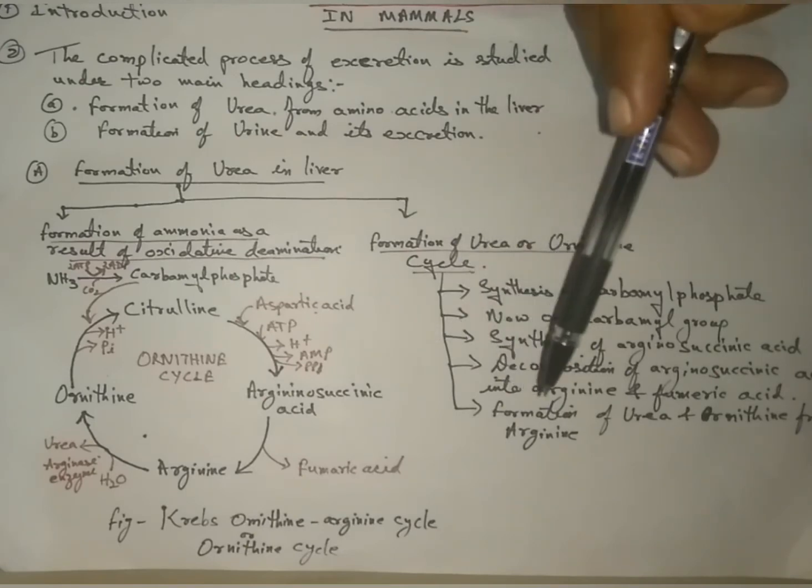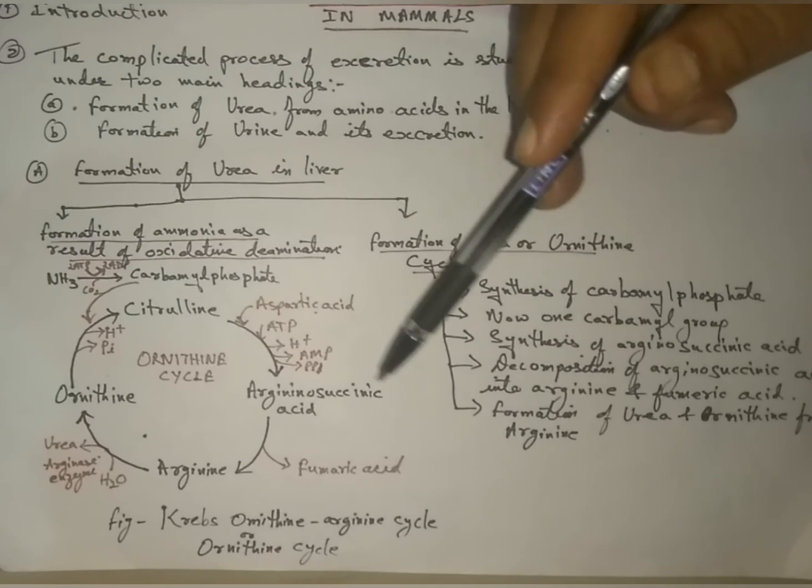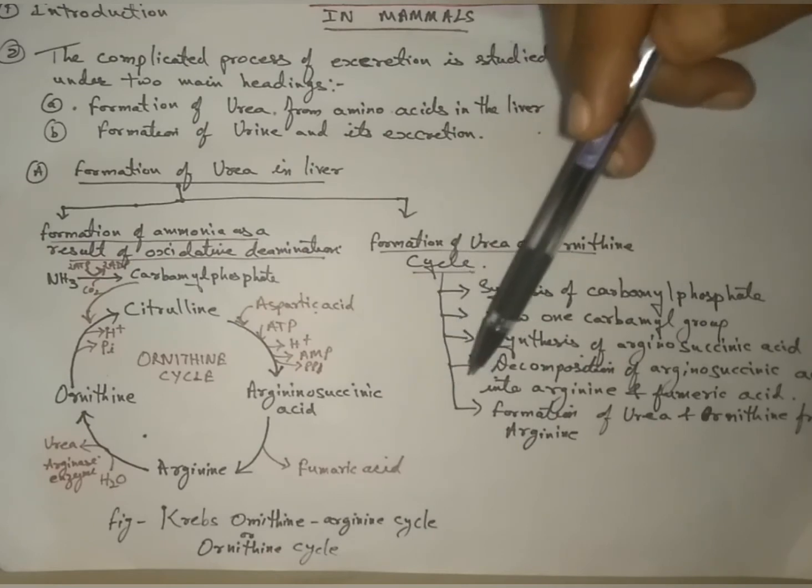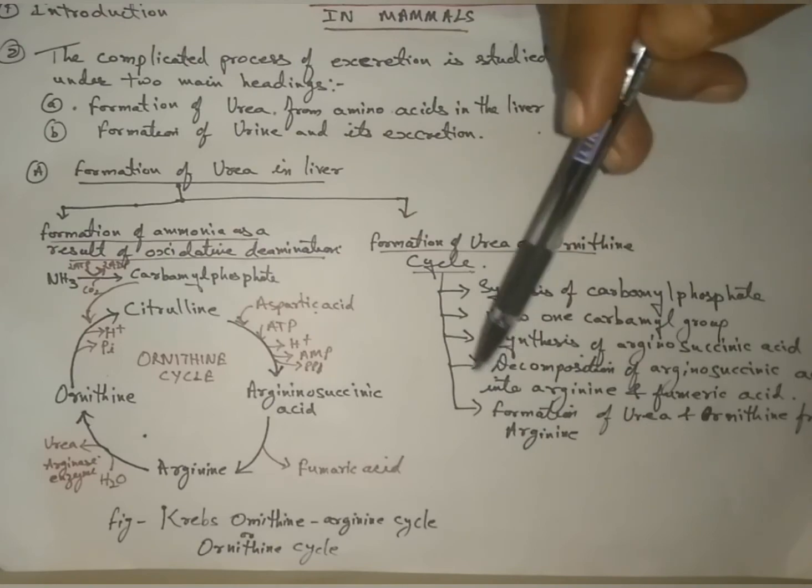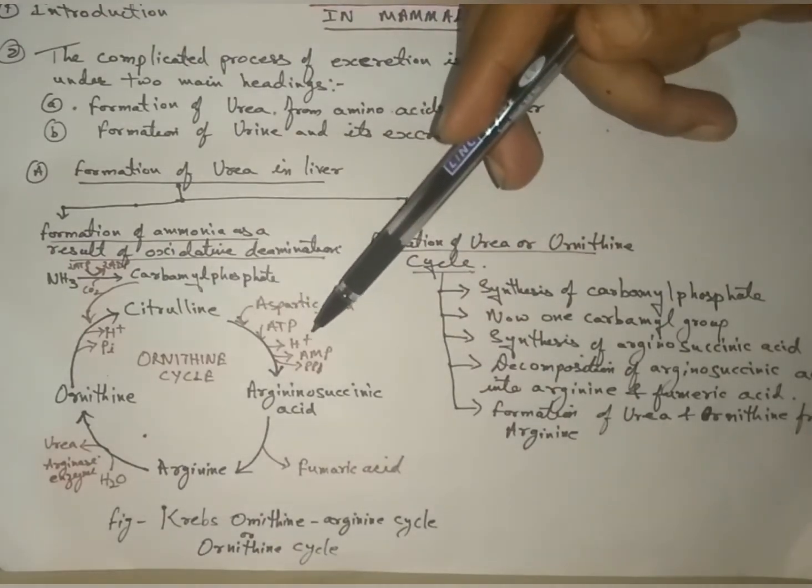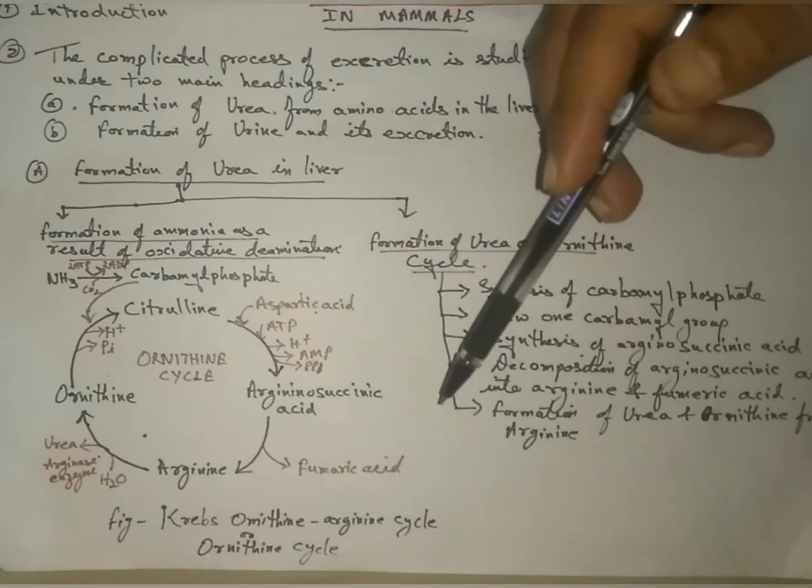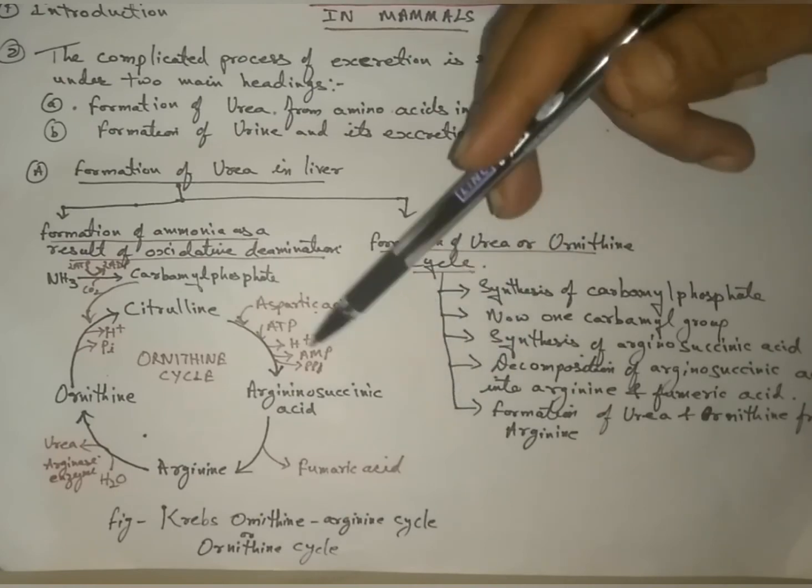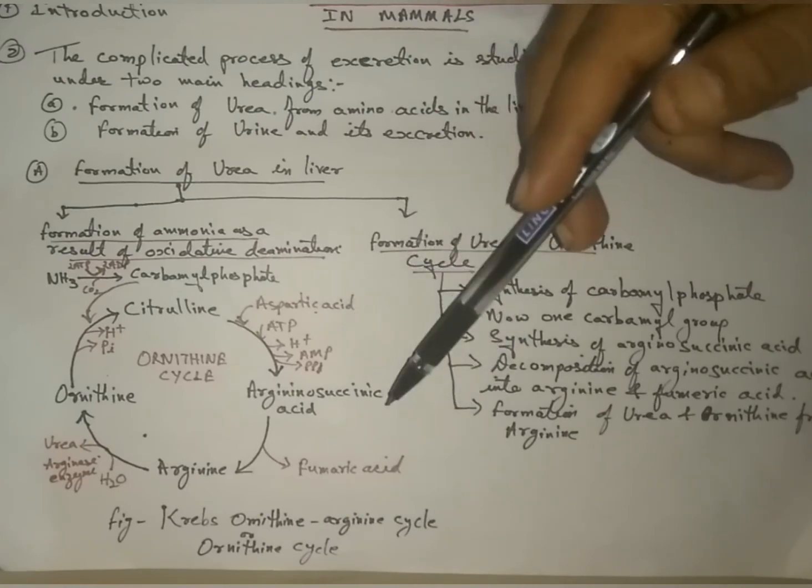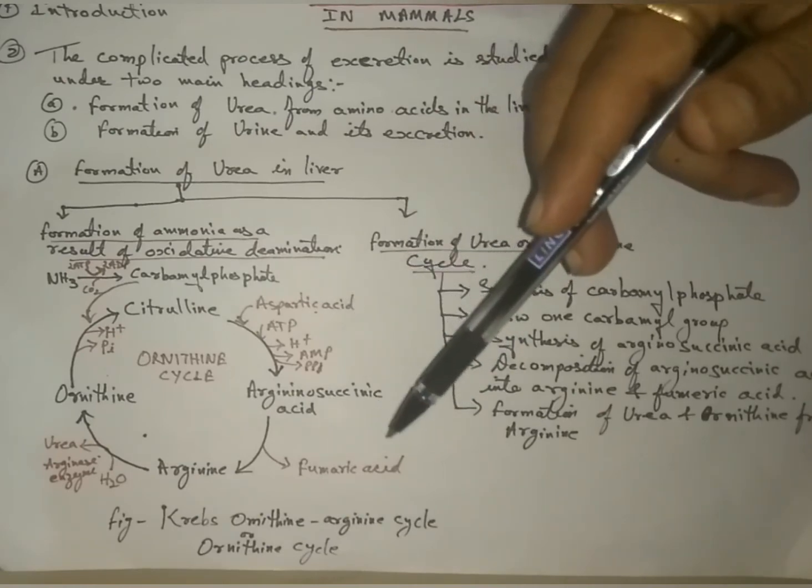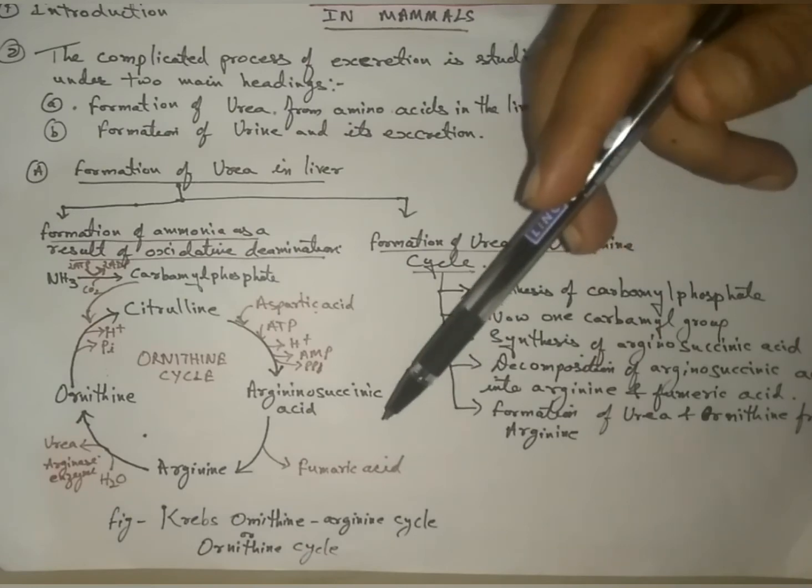Synthesis of arginosuccinic acid: synthesis of arginosuccinic acid takes place by the union of citrulline and aspartic acid (aspartate) in the presence of ATP. ATP is converted into AMP plus PPi. This reaction takes place in the presence of enzyme arginosuccinate synthetase.